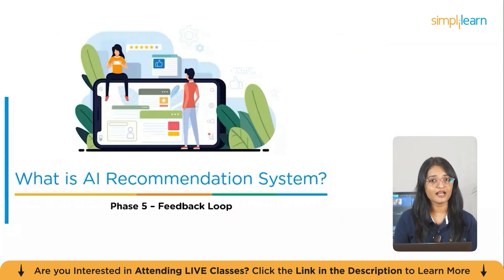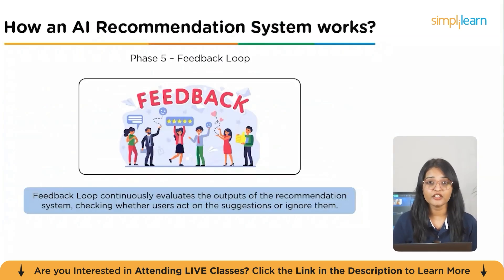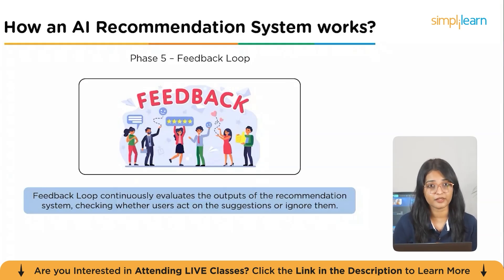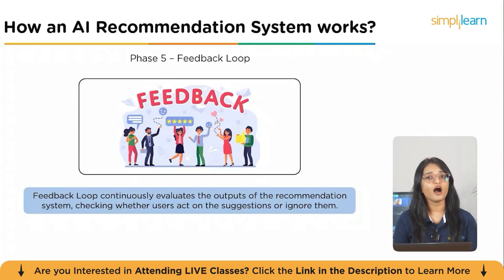The fifth and final stage is the feedback loop. This stage continuously evaluates the outputs of the recommendation system, checking whether users act on the suggestions or ignore them. That feedback is then fed back into the model, helping it adapt, learn, and improve — ideally making recommendations more accurate and relevant over time.